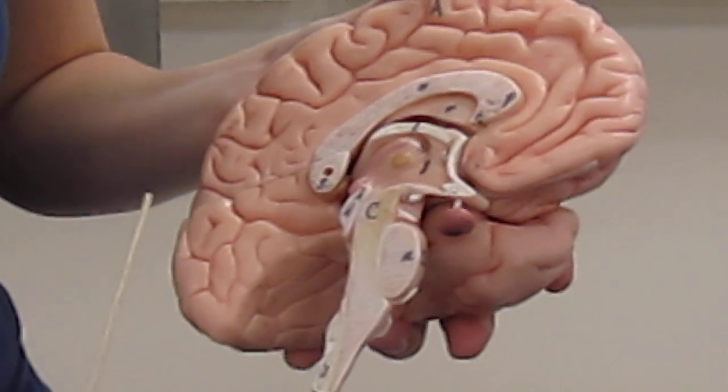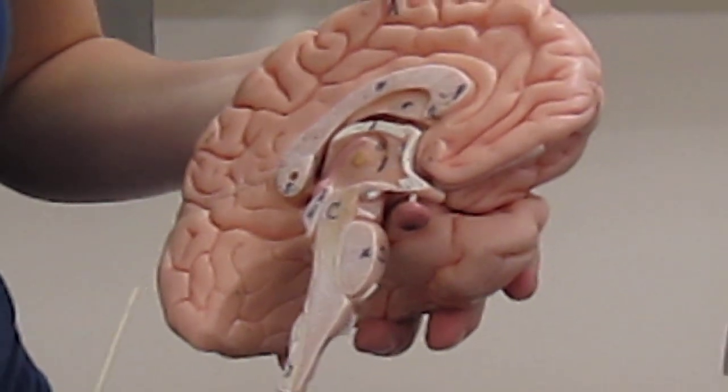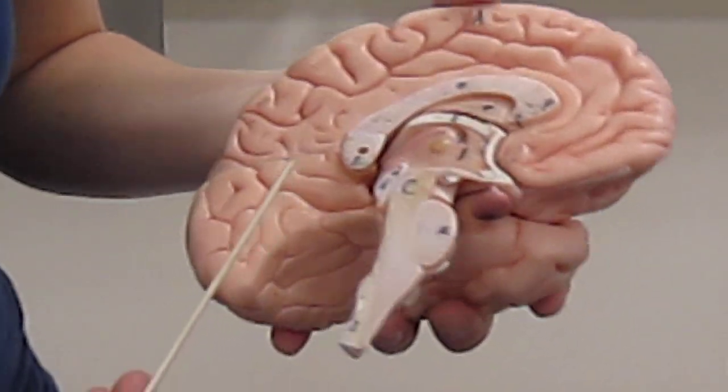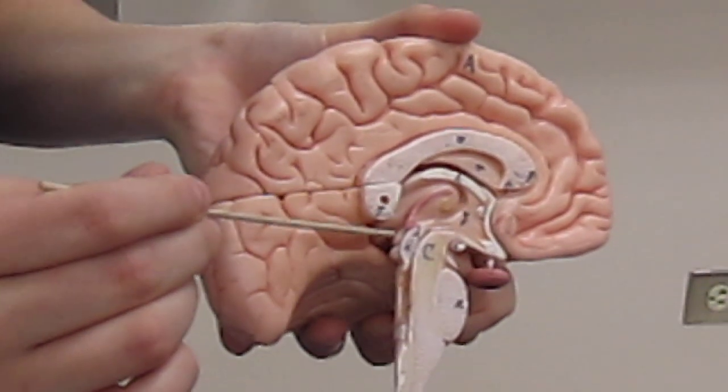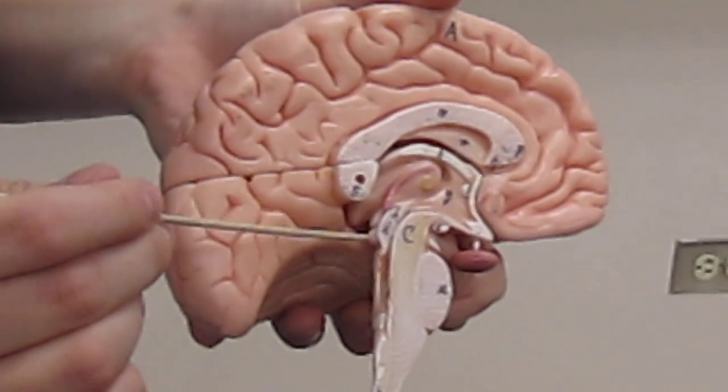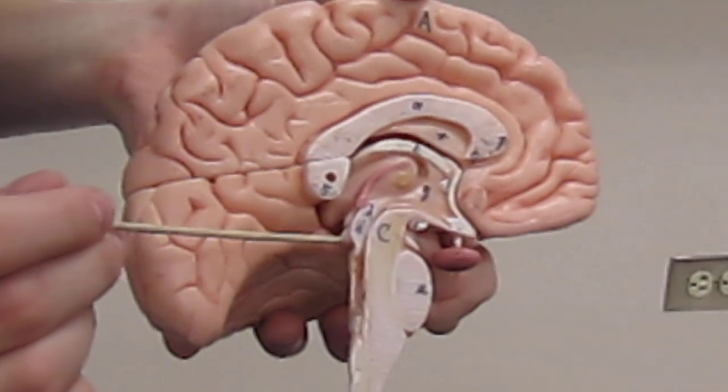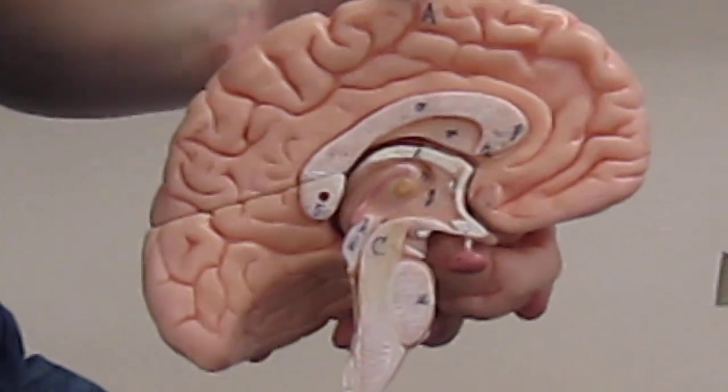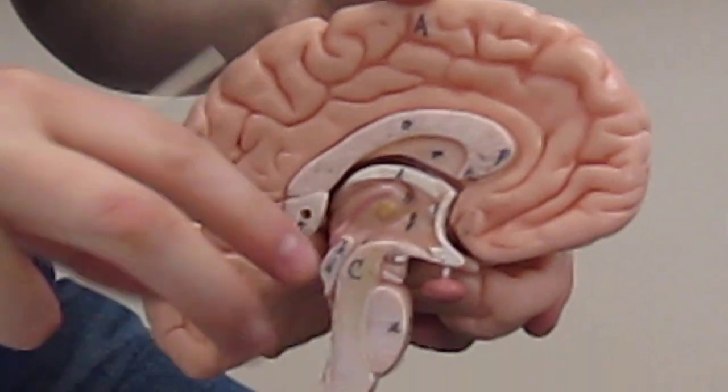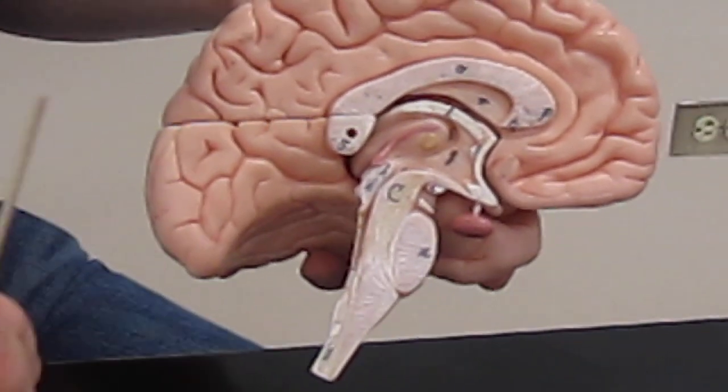It is also composed of the corpora quadrigemina, which are part of the midbrain and are located on this side. These are the superior colliculus and inferior colliculus. When the two halves of the brain are put together, there are four, hence the name quadrigemina.